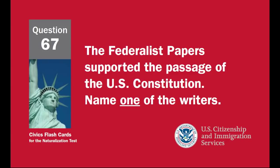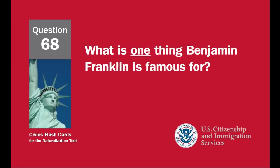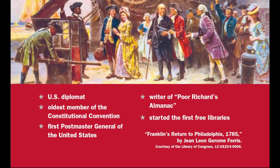The Federalist Papers supported the passage of the U.S. Constitution — name one of the writers: James Madison, Alexander Hamilton, John Jay, or Publius. What is one thing Benjamin Franklin is famous for? U.S. diplomat, oldest member of the Constitutional Convention, First Postmaster General of the United States, writer of Poor Richard's Almanac, started the first free libraries.